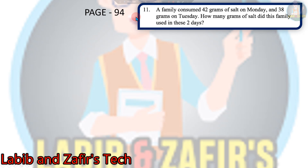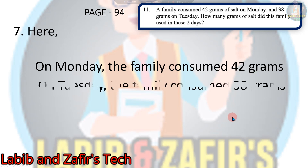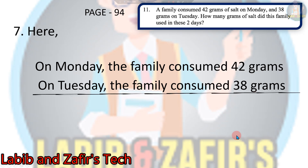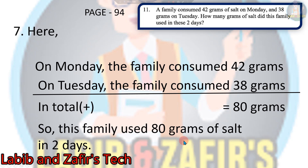This is also from page 94. A family consumed 42 grams of salt on Monday and 32 grams on Tuesday. How many grams of salt did this family use in these two days? We have to find how much salt the family used on Monday and Tuesday. On Monday they used 42 grams and on Tuesday they used 38 grams. Adding these: the total is equal to 80 grams. So this family used 80 grams of salt in two days.